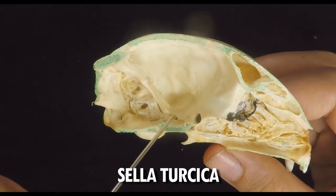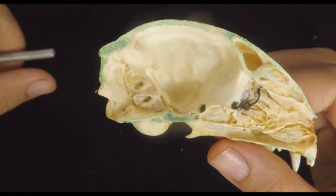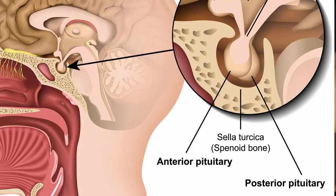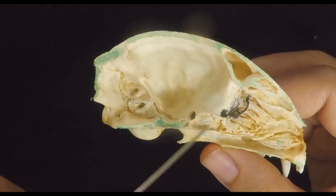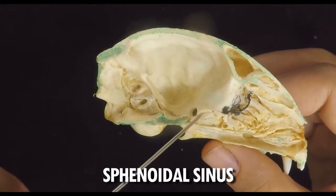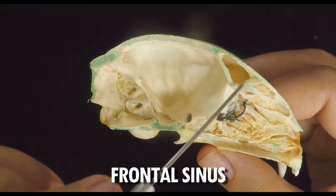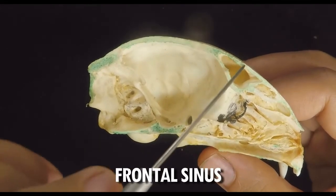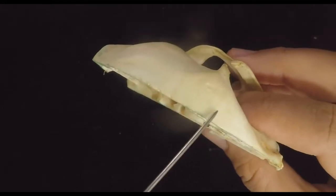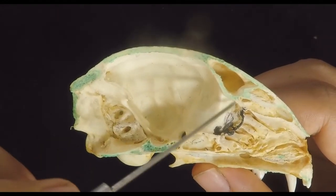Why does the pituitary gland have to sit in such a special place in the bone? Because if you look at it in the brain, it kind of looks like a bag of testicles that just dangles around, so it has to be somehow secured. This sinus — this main cavity of your pre-sphenoid bone — is the sphenoidal sinus. And up here is your frontal sinus, because this bone is the frontal bone.